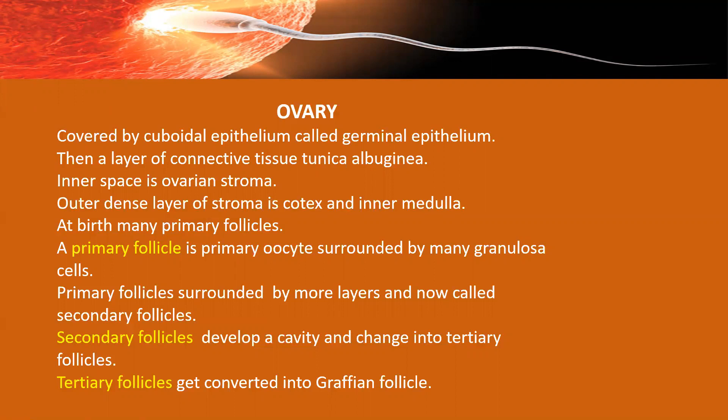At the time of birth, the human ovary contains many primary follicles, which are large in number. After birth, a large number of these follicles are destroyed either during embryonic development or just immediately after birth. This phenomenon is known as follicular atresia. Whatever follicles are left in the ovaries, their numbers will not increase throughout the life of that female, and these follicles remain in the growth phase.